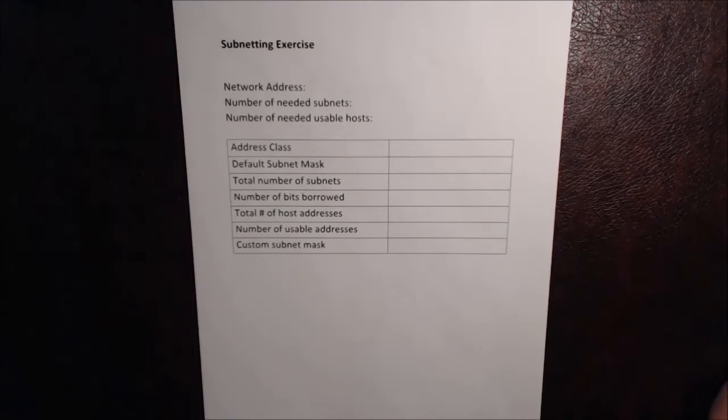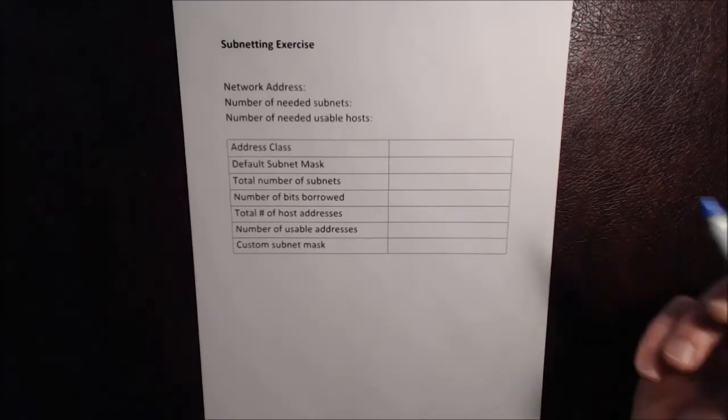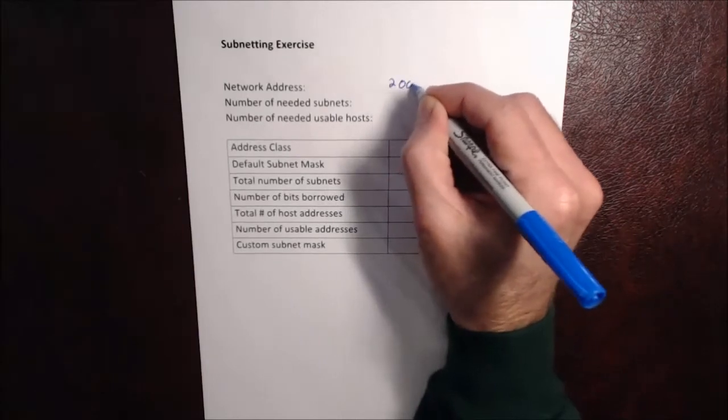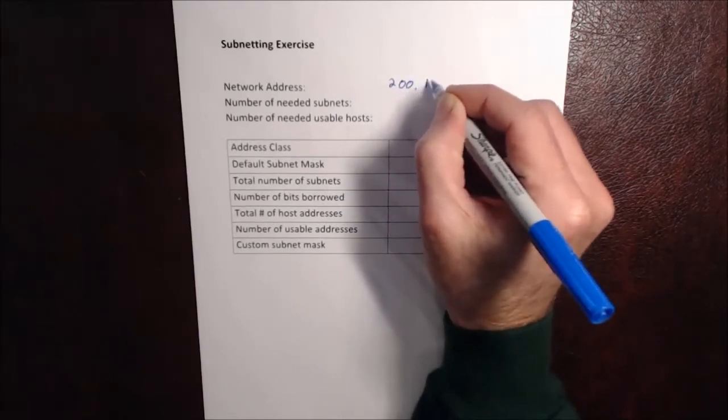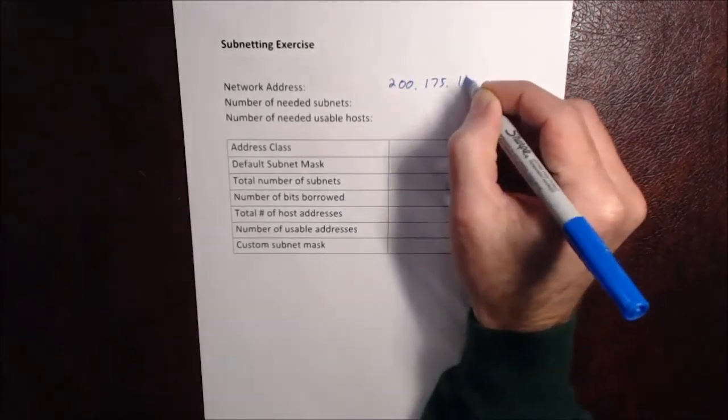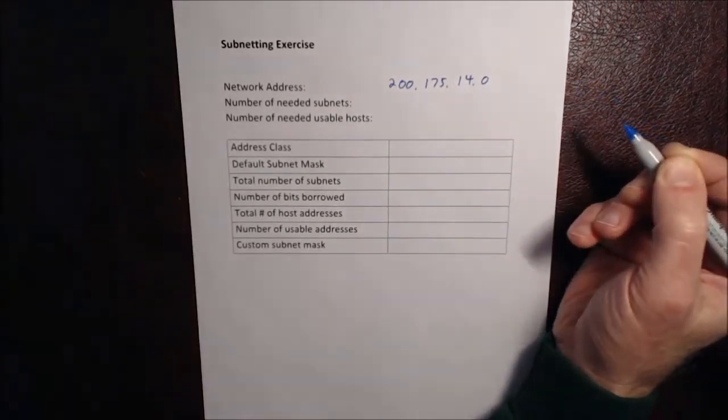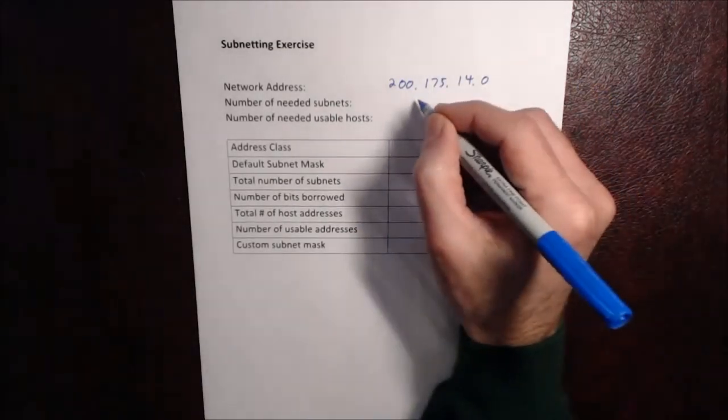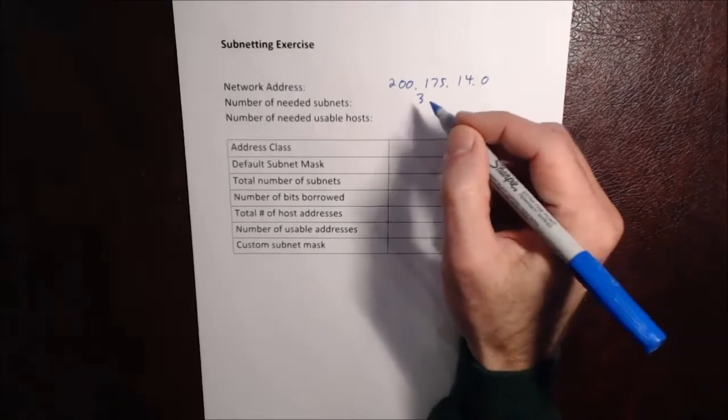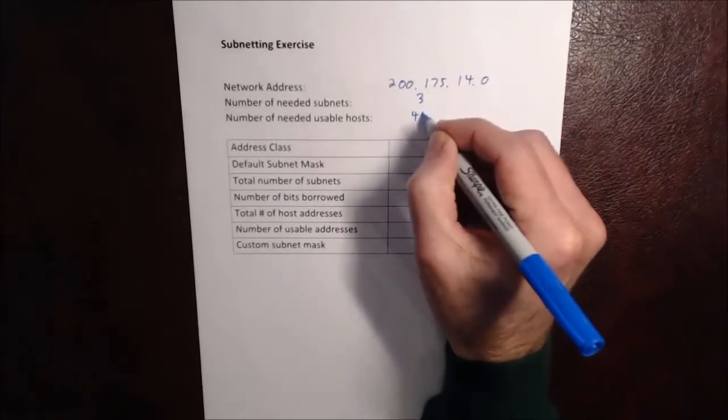Hi, this is Professor Nabozny, and this video is going to demonstrate how to take a Class C size network and subnet it into smaller subnets. So for our exercise, we're going to be given some information. In this case, we're going to start with our network address 200.175.14.0. We need three subnets and 45 usable hosts.